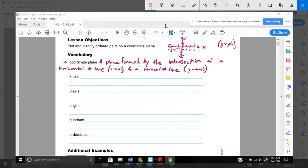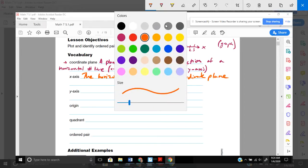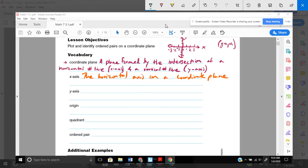The x-axis, which we already kind of talked about, is the horizontal axis on a coordinate plane. And the y-axis is similar, except it's the vertical axis on a coordinate plane. So it's the vertical axis on a coordinate plane.